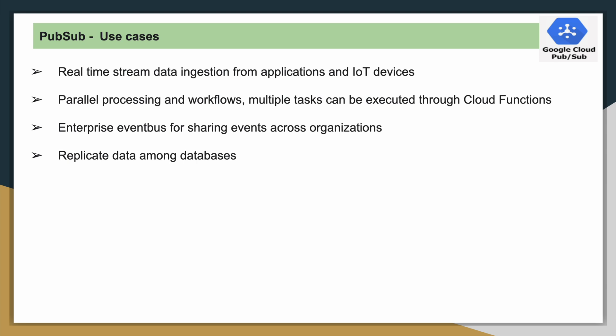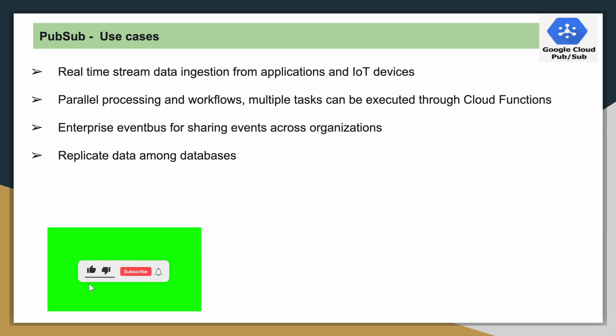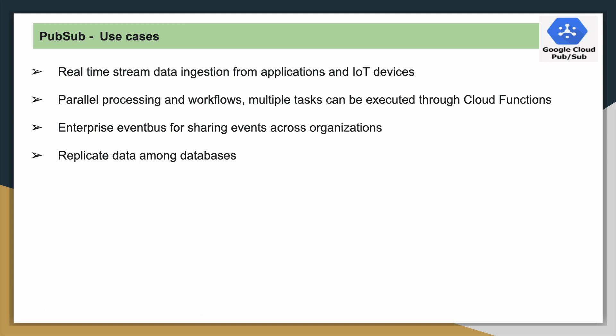Now we will see some common use cases. We have many use cases but will focus on the common ones. The first use case is real-time stream data processing. When we are trying to process streaming data, usually the data will be streamed using PubSub — it is a commonly used service for streaming data.